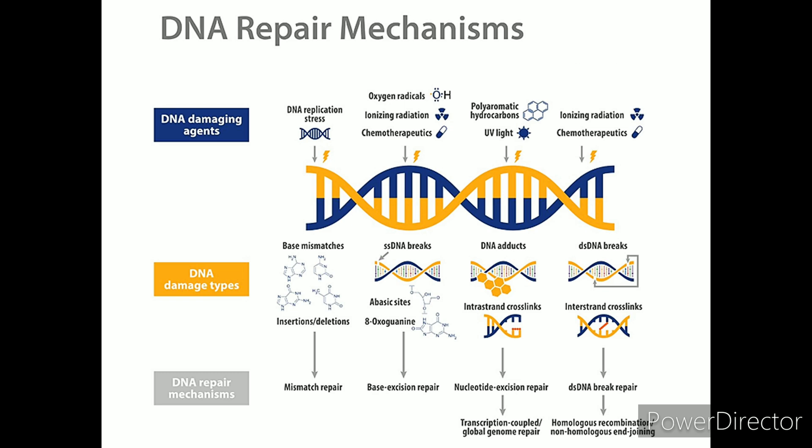Nucleotide Excision Repair. Direct repair of damaged DNA — sometimes damage to a base can be directly repaired by specialized enzymes without having to excise the nucleotide. Recombination Repair. This mechanism enables a cell to replicate past the damage and fix it later.